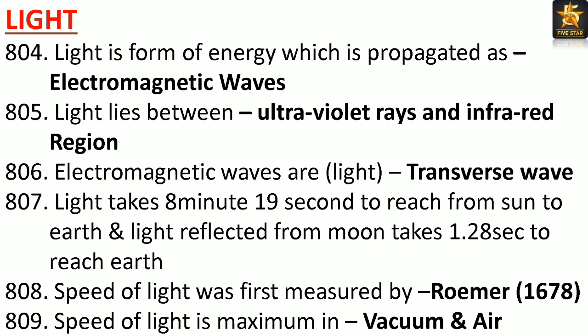Light is a form of energy which is propagated as electromagnetic waves. Light lies between ultraviolet rays and the infrared region. Electromagnetic waves or light are transverse waves. Light takes 8 minutes 19 seconds to reach from the sun to Earth, and light reflected from the moon takes 1.28 seconds to reach Earth.